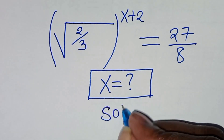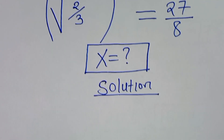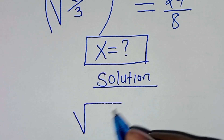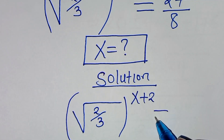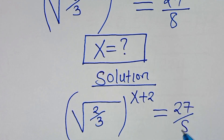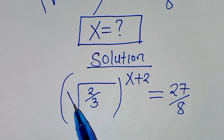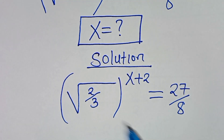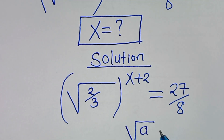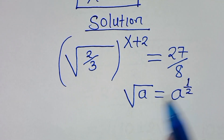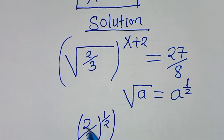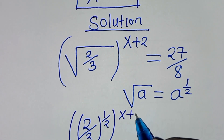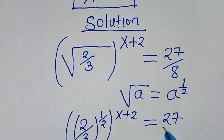Let's present a solution to this problem. We have the square root of 2 over 3, raised to the power of x plus 2, equal to 27 divided by 8. The first step: we can write the square root of 2 over 3 as 2 over 3 raised to the power of one half, since the square root of a equals a to the power of half. Applying this property, we have 2 over 3 to the power of one half, raised to the power of x plus 2, equal to 27 divided by 8.